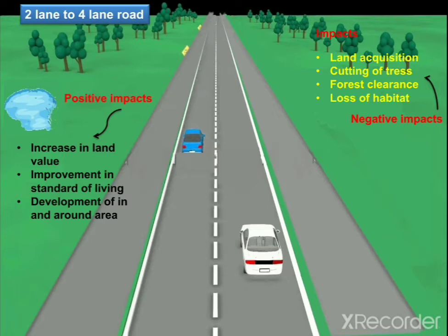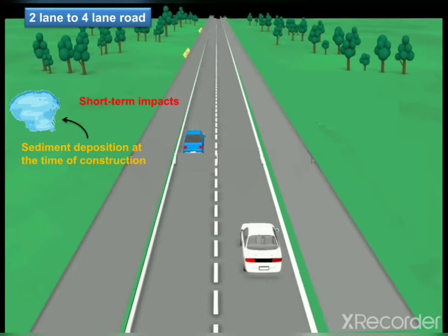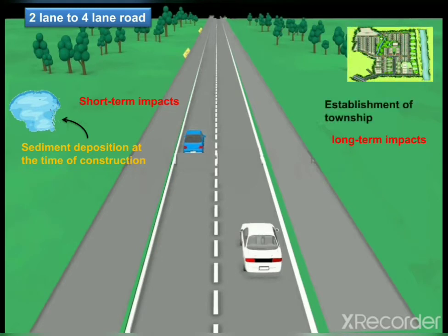Consider a water body near to this road development project. During the constructional phase, there is a higher chance of sediment deposition. This particular impact happens only during the constructional phase, so it can be grouped under short-term impacts. Long-term impacts occur for a really long time — for example, a higher chance of migration of people to this particular area, establishment of a township, and thereby increase in population growth.